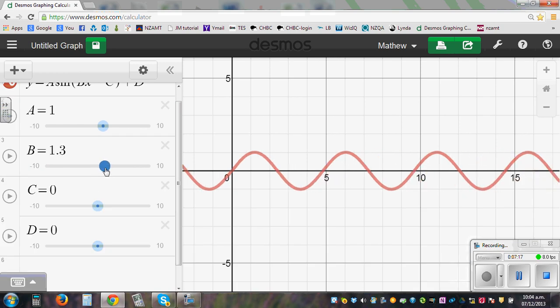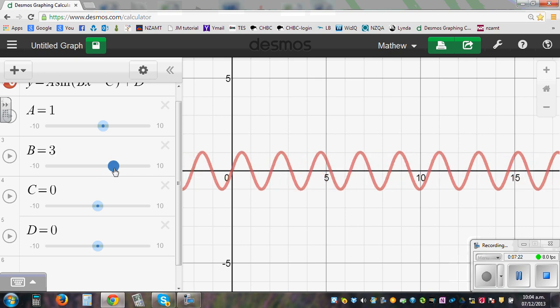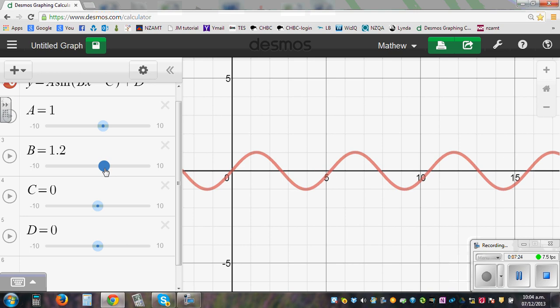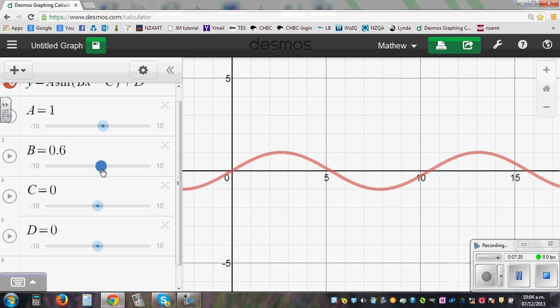And then if we change B, the frequency basically changes. The number of times it goes within 1 cycle changes. So B changes the frequency of the cycle. A changes the amplitude.